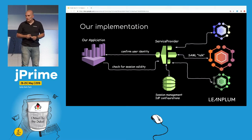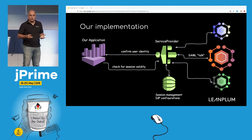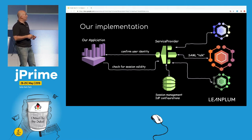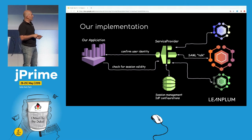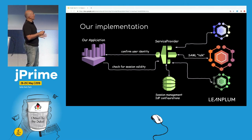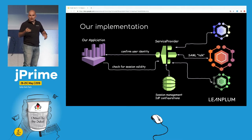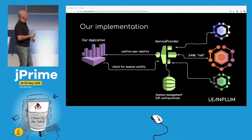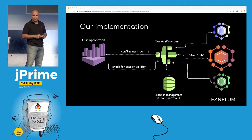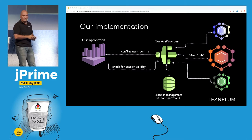Our service provider also implements the single logout protocol. When a logout response comes in, we must invalidate the session. Because the session is stored in our microservice and the Leanplum application doesn't know about it, the application polls every 30 seconds — configurable — to check whether the session is still valid.